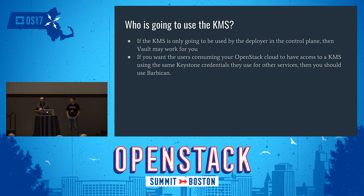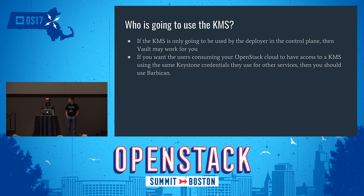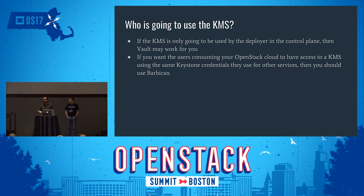Question from the audience: did you do any performance comparison between the two systems? In both systems, performance is really dependent on the back end. For Barbican, the simple crypto plugin is pretty fast since it's all in memory. At a large Rackspace deployment, the bottleneck was the HSM — they were able to saturate the process pipeline, maxing out at about 50 requests per second. For Vault, whatever backend you have — like Consul or etcd — will be your bottleneck, and those should be pretty fast.